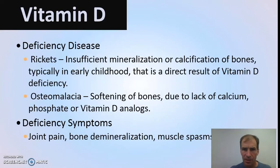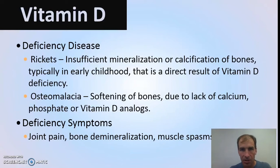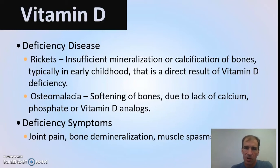When we talk about deficiencies, there is one I want you to know because worldwide it is actually an issue: it's called rickets, or osteomalacia. Rickets is more the childhood version; osteomalacia is more the adult version. This is basically a result of insufficient mineralization due to decreased calciferol — Vitamin D — in the diet, or lack of sunlight, or both. This is an issue worldwide, and it's a deficiency we do see quite a bit today.